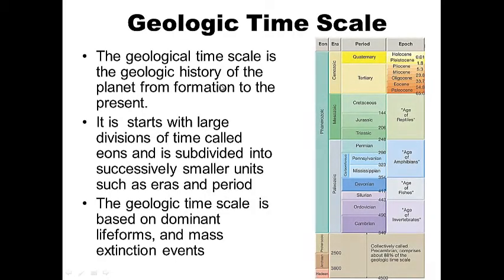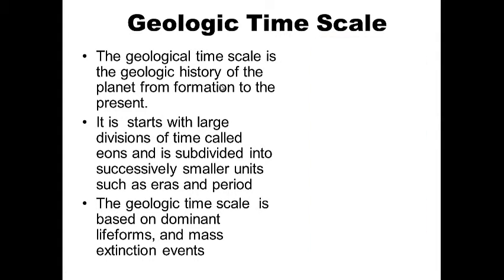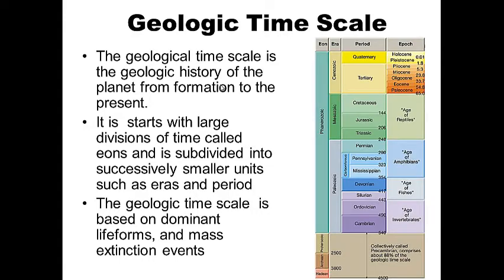The geologic timescale is essentially the geologic history of the planet from its formation to the present. It starts with large divisions of time called eons and is subdivided into successively smaller units, such as eras and periods. The geologic timescale is based on dominant lifeforms and mass extinction events. It's subdivided because of the dominant lifeforms — the animals that dominated our Earth at the time.